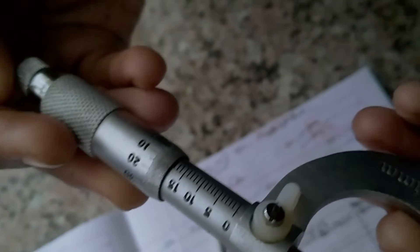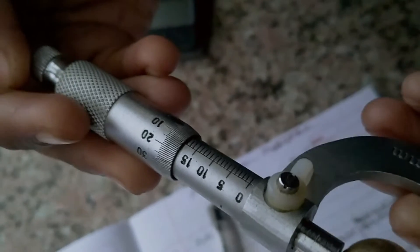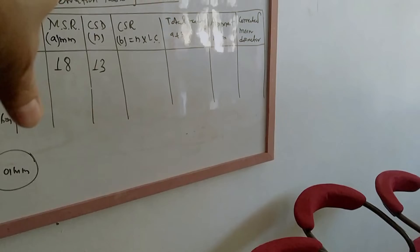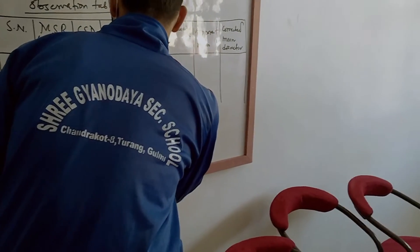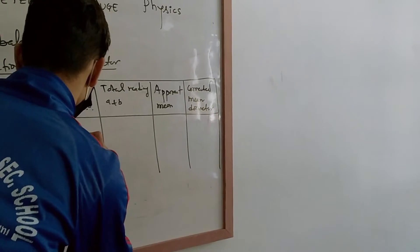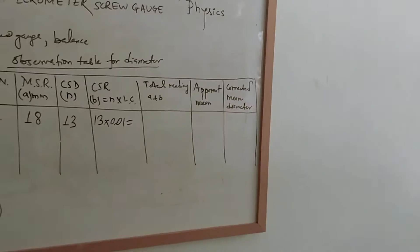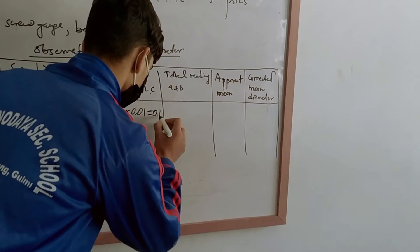The circular scale reading is 13. So the circular scale division is 13, giving a reading of 13 × 0.01 = 0.13 mm.